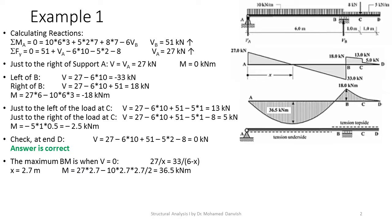Using similarity of triangles: 27 over x equals 33 over (6 minus x), giving x equals 2.7 meters. The maximum bending moment is then 27 times 2.7 minus 10 times 2.7 times 2.7 over 2, which equals 36.5 kN·m.